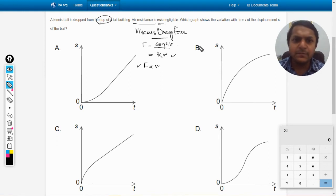Now which graph shows the variation with time t of the displacement of the ball? So now he's not talking about the velocity beta. So it's very important to understand that he's talking about the displacement.